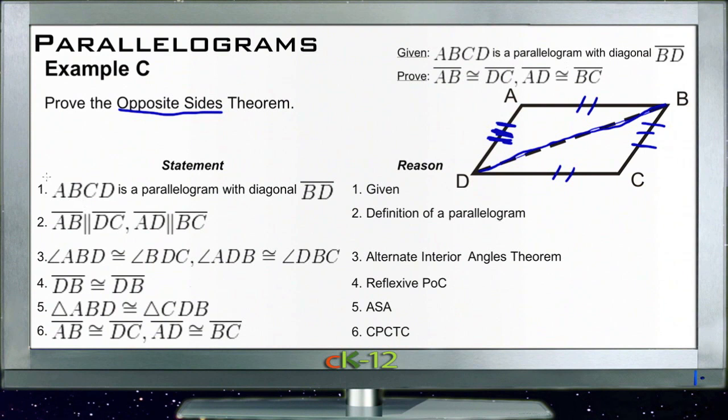First, we have ABCD is a parallelogram with a diagonal BD, and that's given. And then, based on the definition of a parallelogram, we know that AB is parallel to DC, and that AD, which we'll do in orange here, AD is parallel to BC, right here.